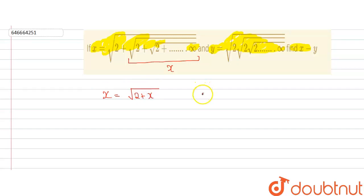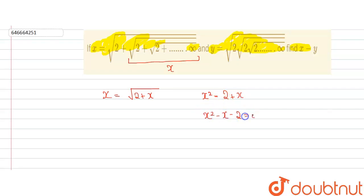Now we square both sides. So we get x² = 2 + x. This equation becomes x² − x − 2 = 0.